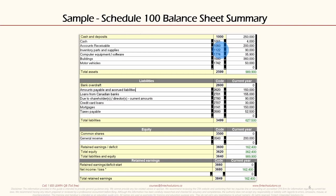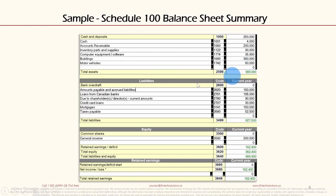Continuing with the assets on Schedule 100: computer equipment/software is GIFI code 1774 — $35,900 in this example. Buildings is code 1680 — $360,000. Motor vehicles is code 1742 — $50,000. The total assets, shown with code 2599, is $989,900. So everything in the assets section begins with number 1, and the total assets code is 2599.